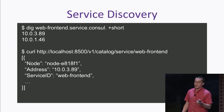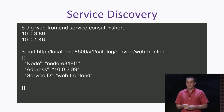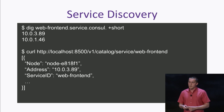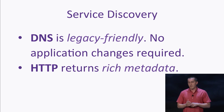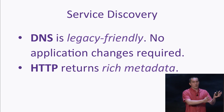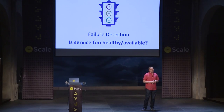Consul exposes service discovery in two ways: via DNS and via a basic HTTP API. The DNS is really simple — you just ask for the service and it gives you IP addresses. The HTTP API gives you a little more metadata. What's really nice is that DNS is very legacy-friendly — everything supports DNS. So if you have an application you don't want to redeploy, DNS is a great way to do service discovery. The HTTP API is there if you need rich metadata, but DNS generally gets you 90–95% of the way there.